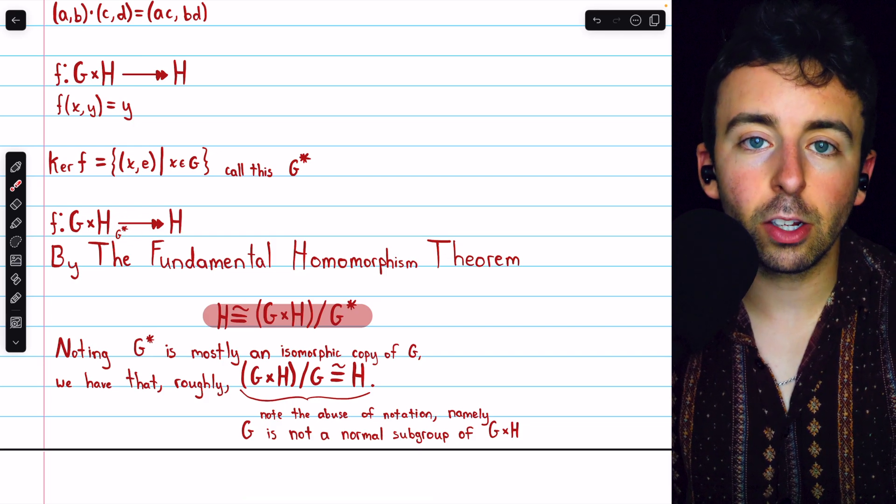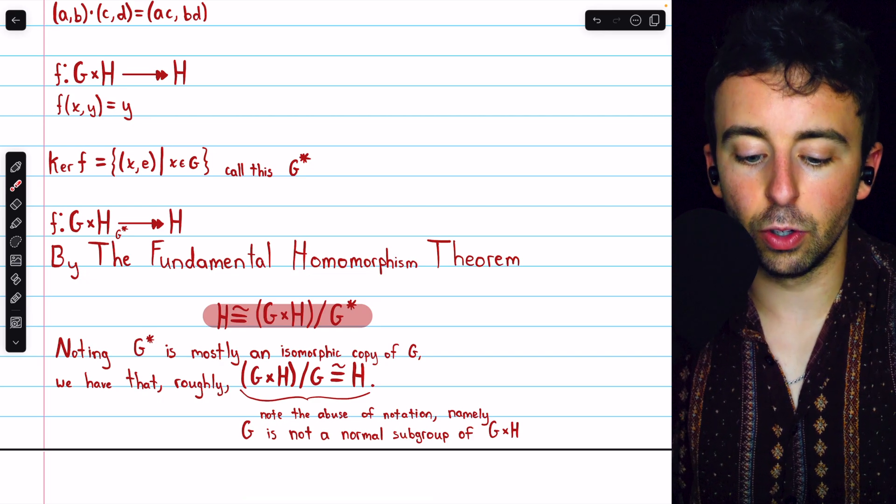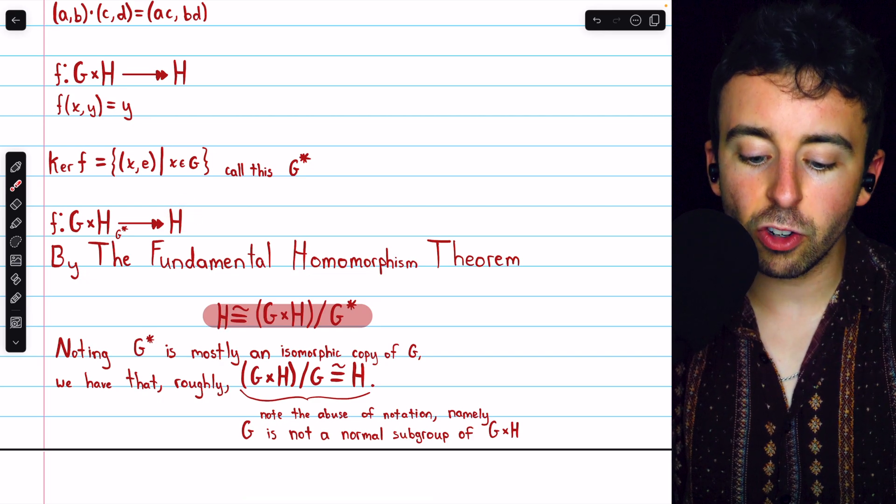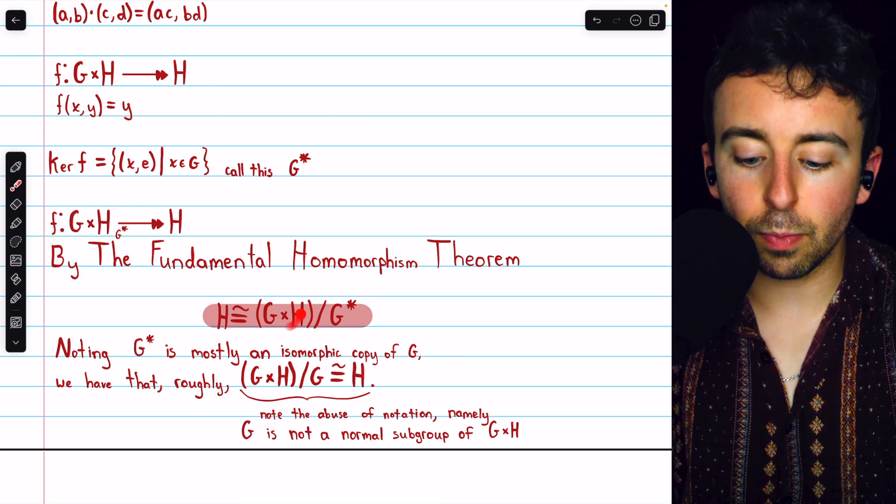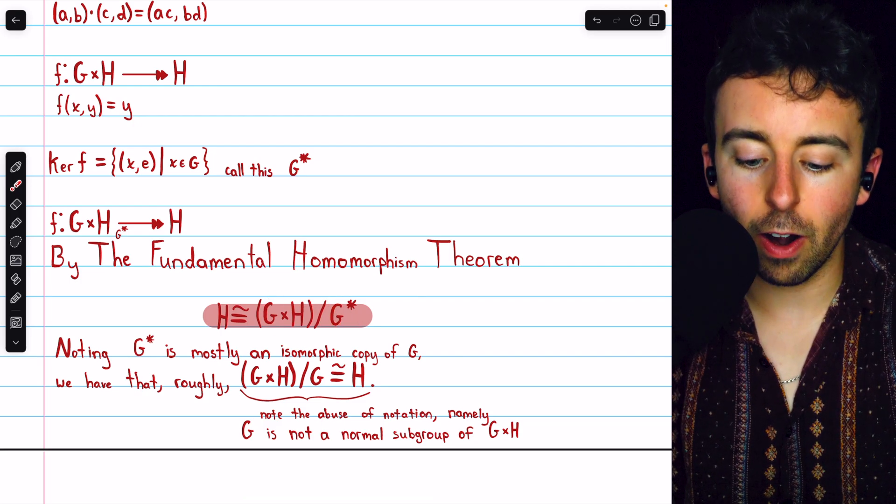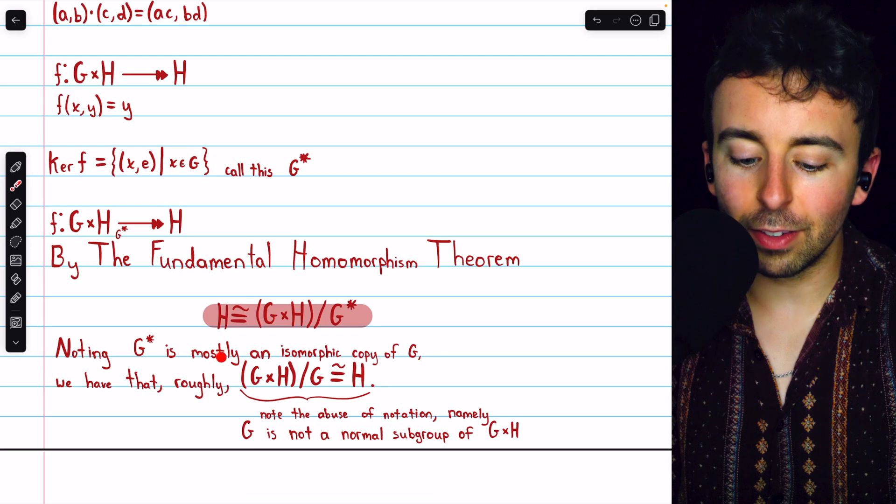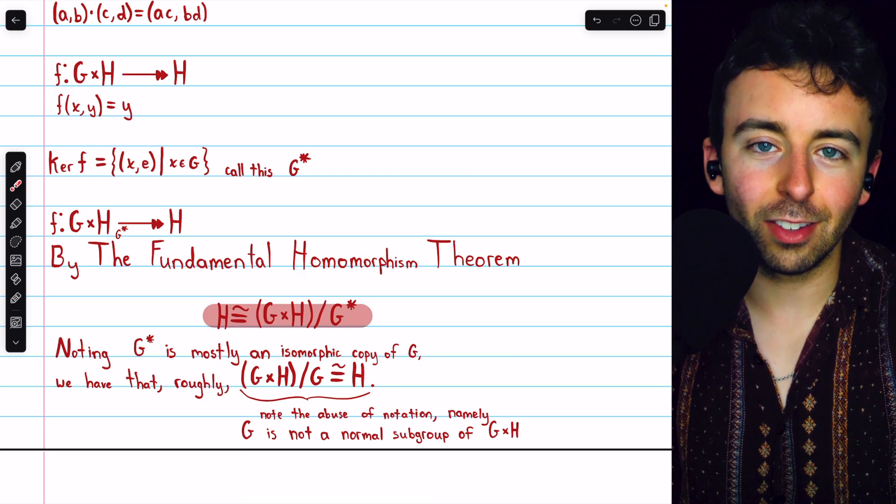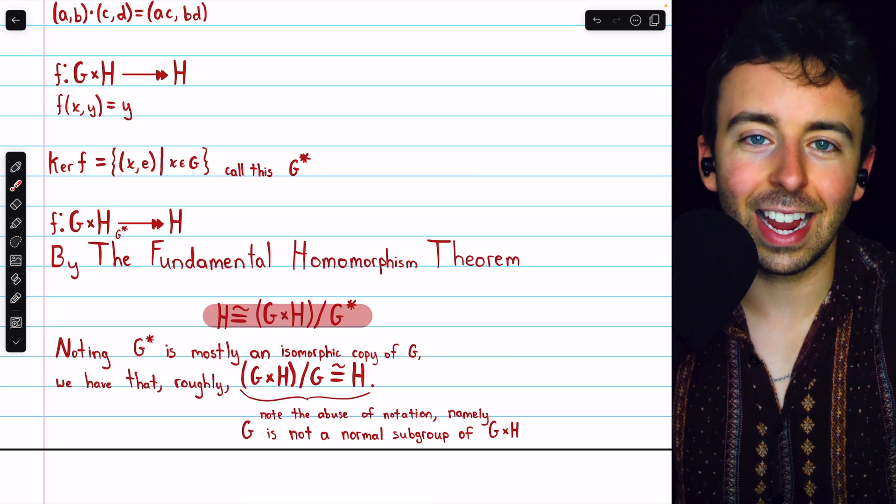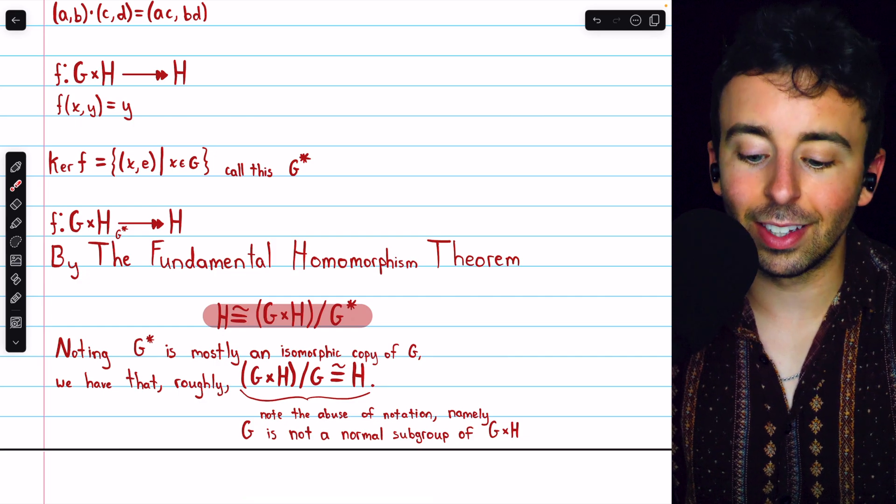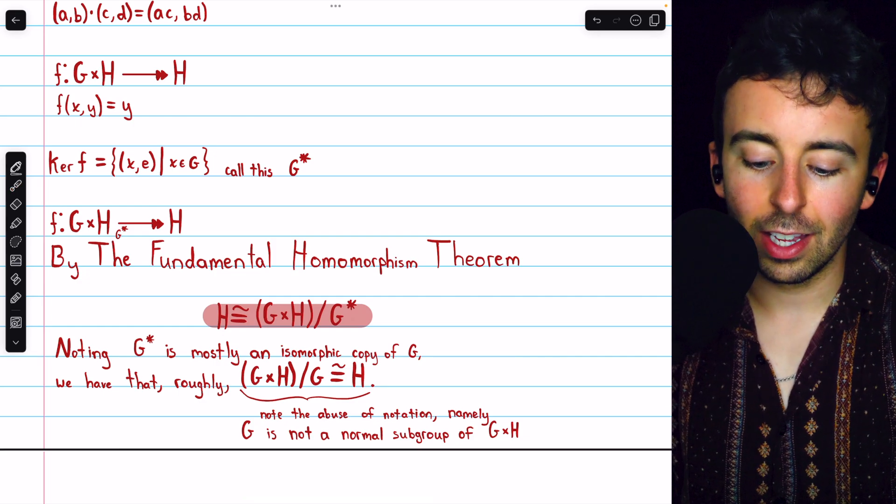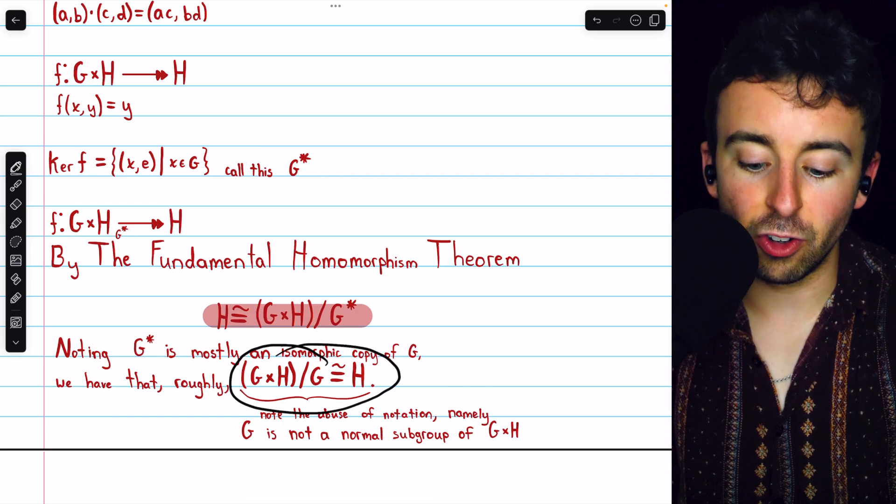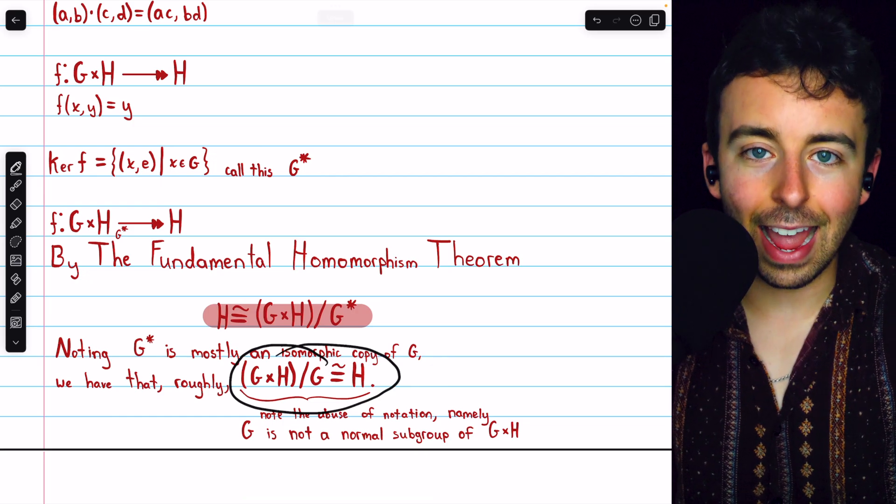And so we can apply the fundamental homomorphism theorem to conclude that this homomorphic image H is isomorphic to the quotient group of the direct product by G star. And like we said, G star is basically just G. It's just a bunch of ordered pairs containing those elements of G as well as the identity of H. And so roughly speaking, we have that G times H by G is isomorphic to H.